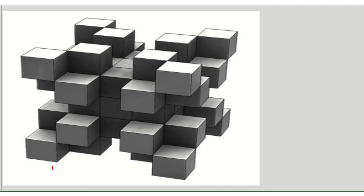Let's count how many cubes are in this structure. Starting from the rightmost layer: one, one, two, three, four, five, six, seven, eight — so there are eight cubes on the rightmost layer. The rightmost and leftmost layers are the same, so out of these five layers, the leftmost layer also has eight cubes.